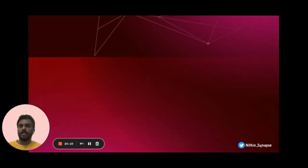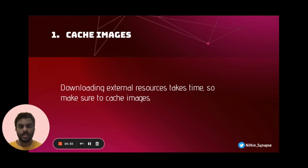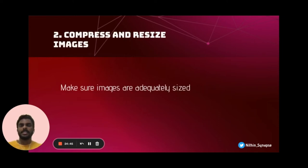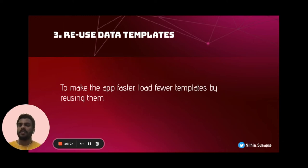There are a set of tips and tricks we should follow. One is caching images — if we load images every time by downloading from external resources it takes longer, but if we cache images, pulling from cache is much faster. Compress and resize images — instead of going for higher resolution, use compressed adequately-sized versions. We can also reuse data templates. In our application there are reusable components developed by our developers, and those data templates created as reusable entities help our app run faster by loading fewer templates.